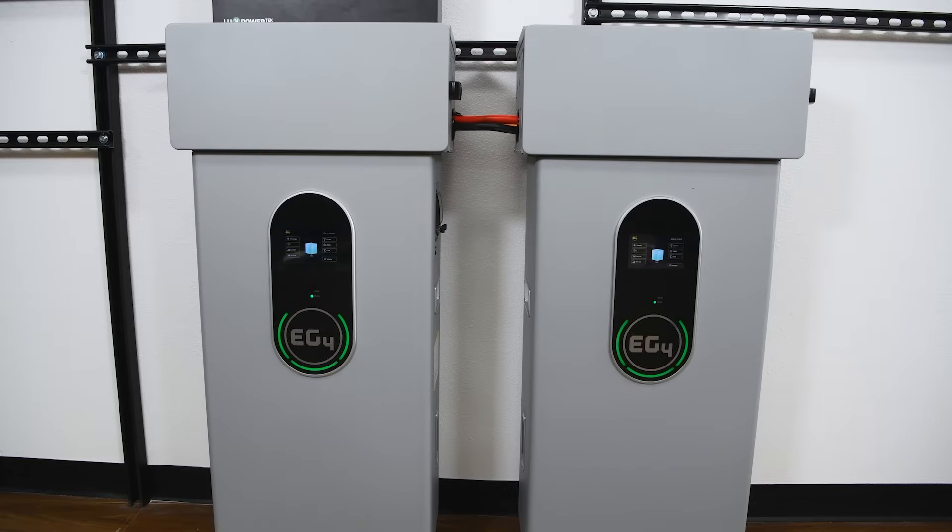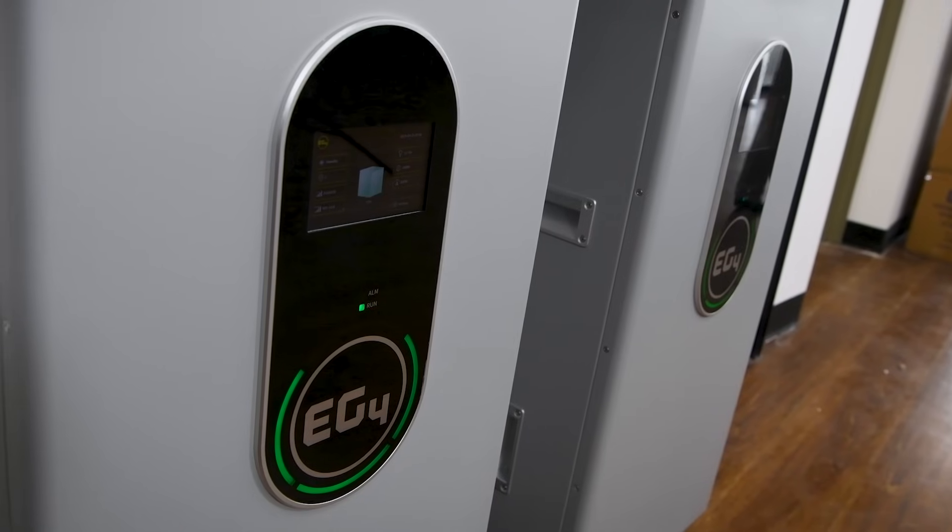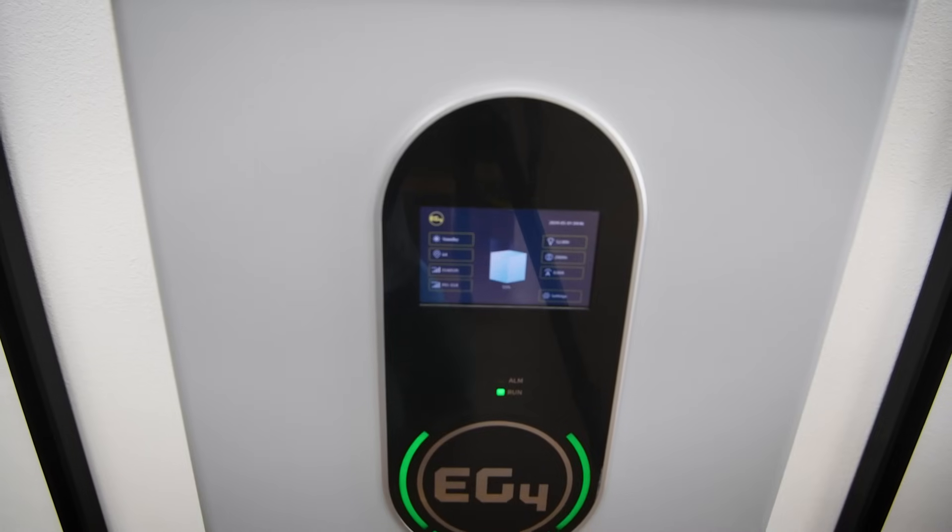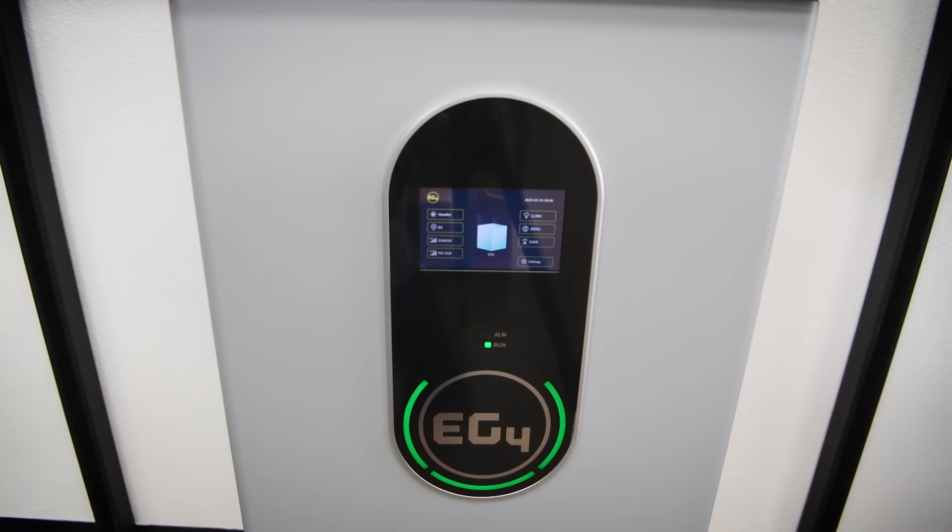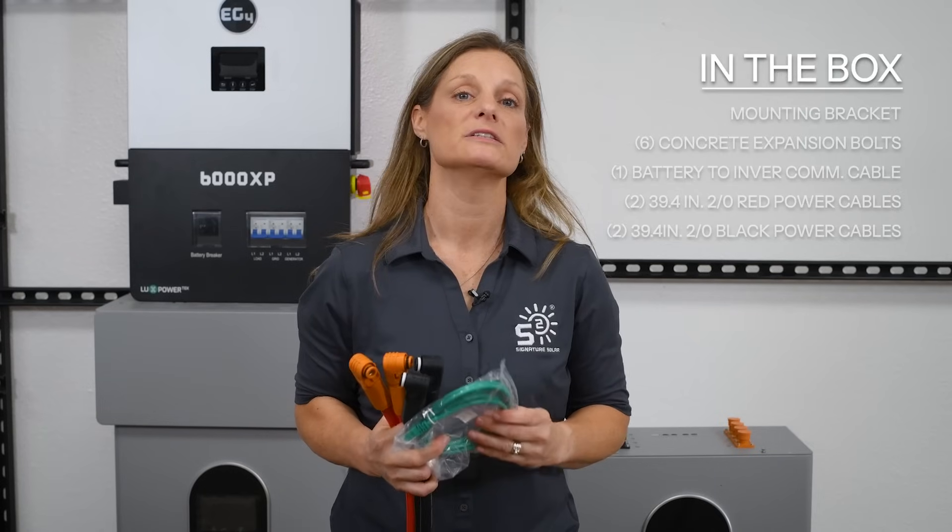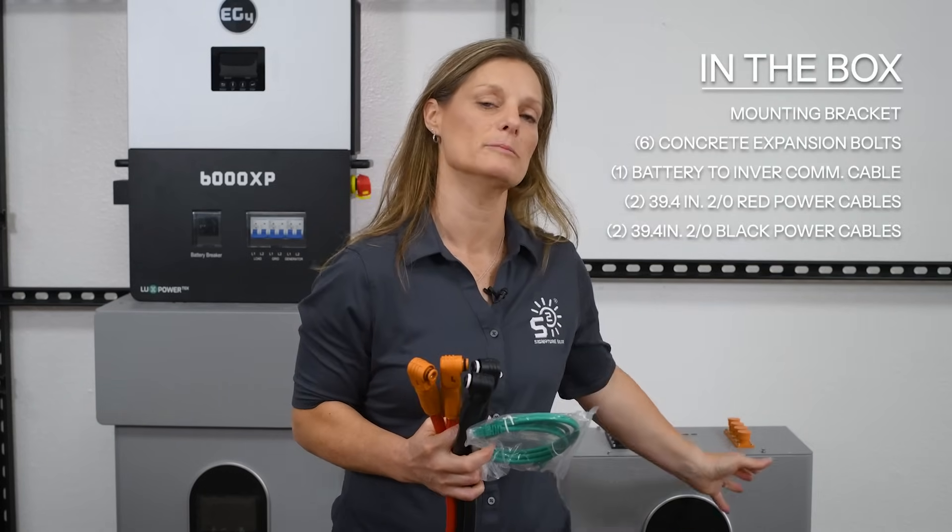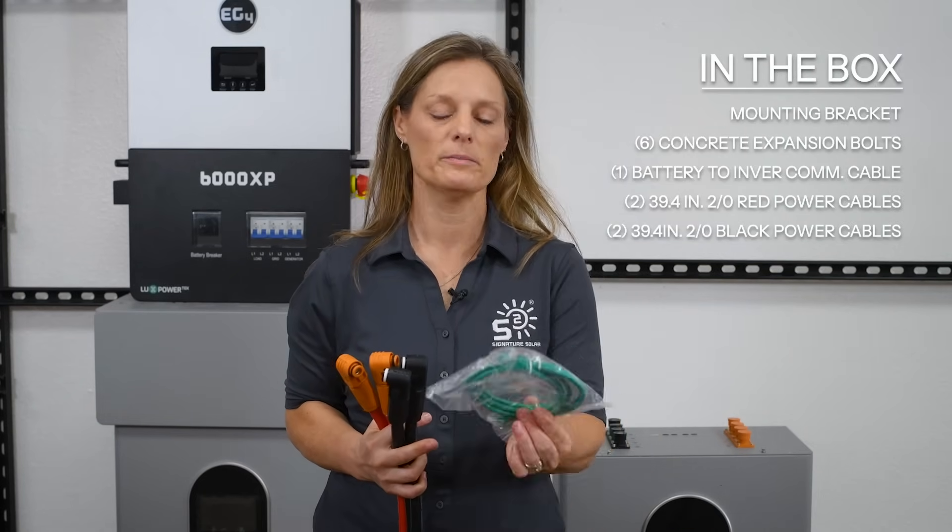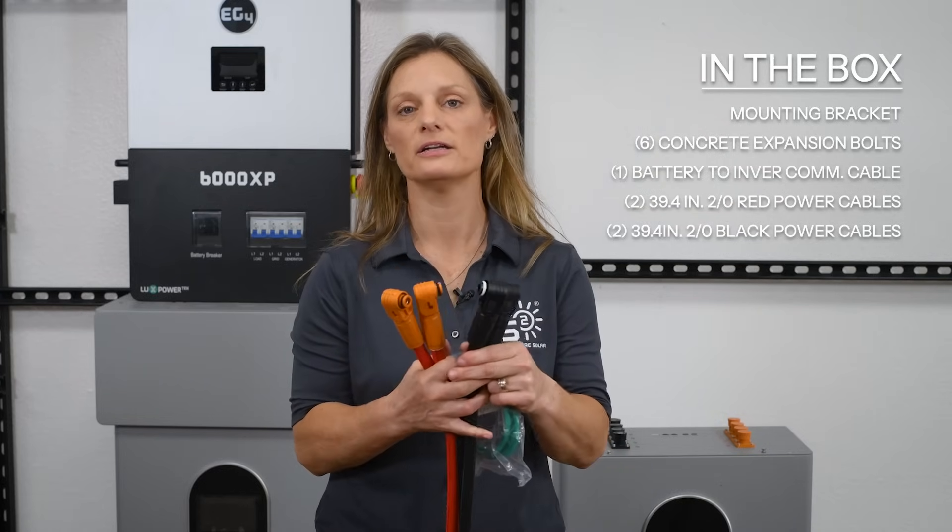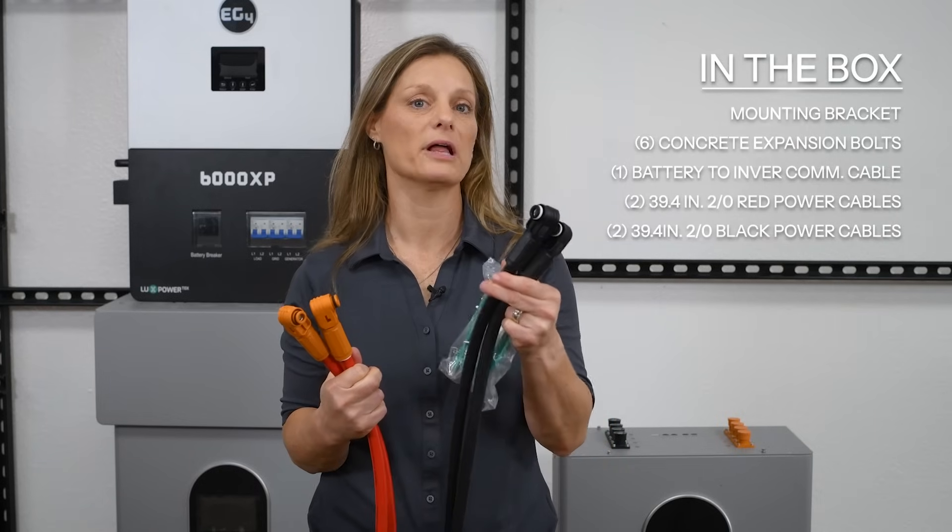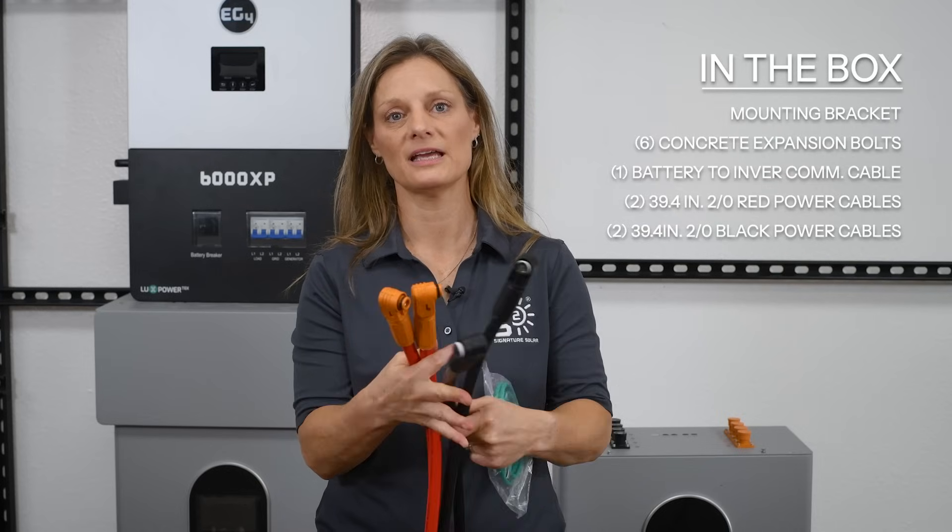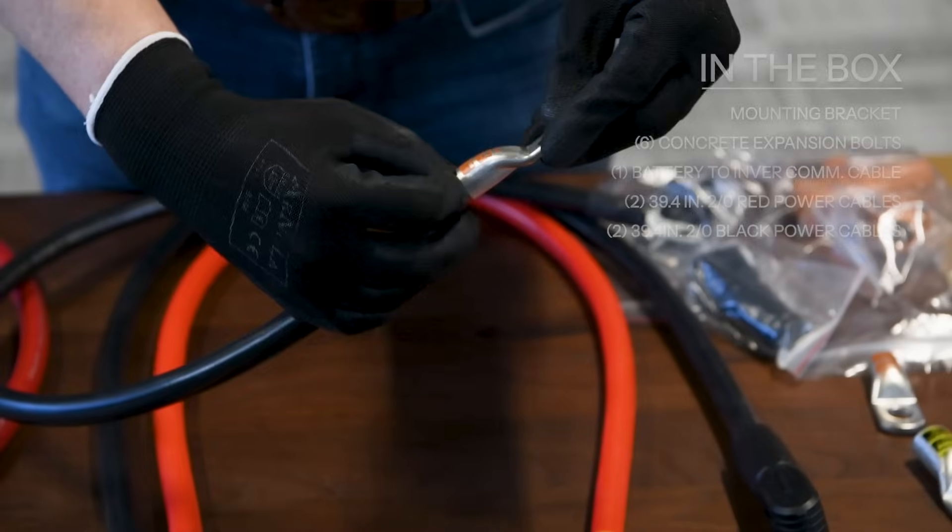The EG4 wall-mount is the latest in energy storage innovation designed specifically for indoor use. While it's optimized for indoor environments, it doesn't compromise on the robust features that EG4 is known for. Each indoor battery comes securely packaged with a mounting bracket attached to the back, six concrete expansion bolts, one battery-to-inverter communication cable, two 39.4-inch 2-watt red power cables, and two 39.4-inch black power cables, each with quick-connect ends on one end and insulated ends for connecting to your inverter on the other.